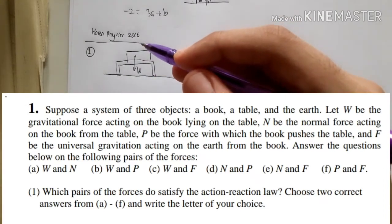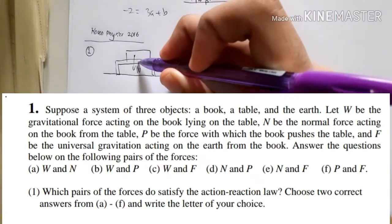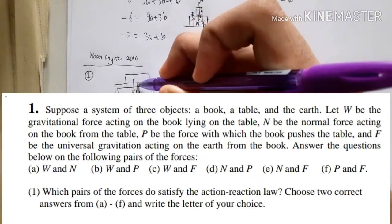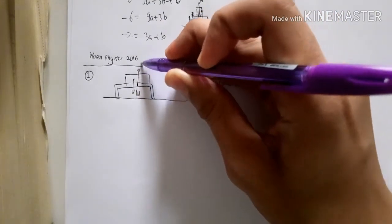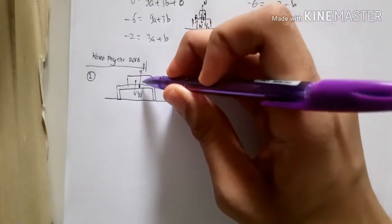Then there's N which is the normal force acting on the book from the table. So the table exerts a normal force that pushes the book. Then there's P, the force with which the book pushes the table.